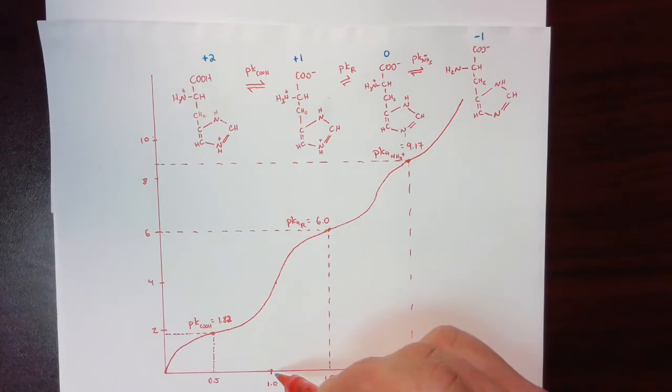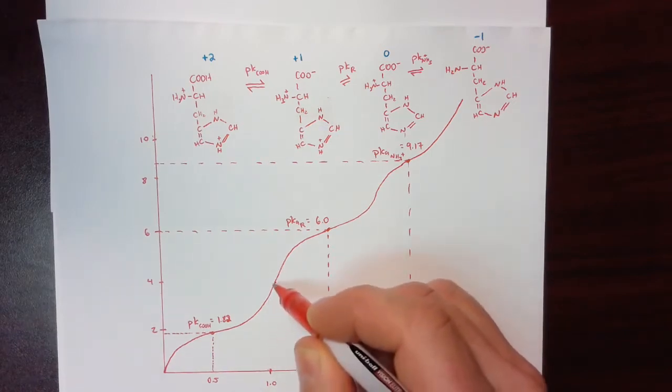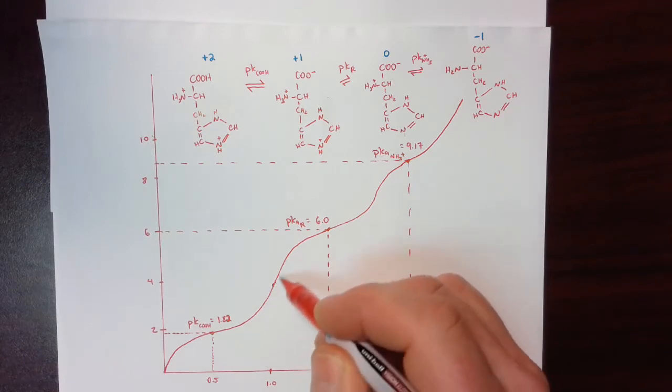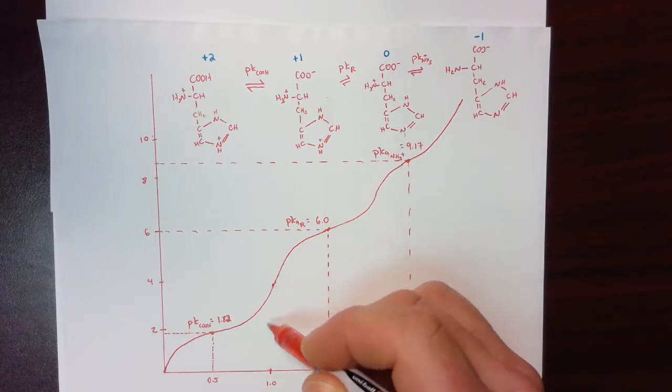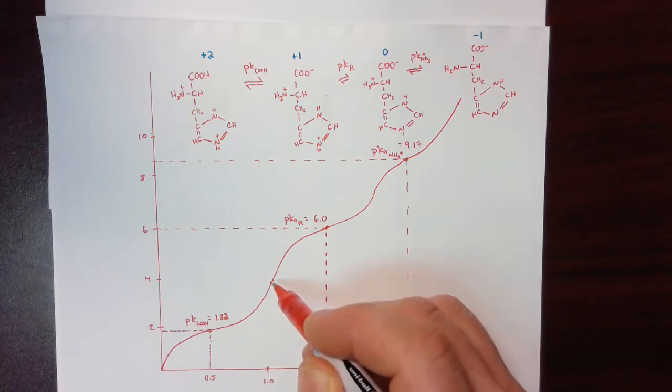You can see that this corresponds to 1 down here. When we say equivalence of OH we are referring to adding the same concentration of base and acid, and on a titration curve that point occurs at the inflection point of the graph. In this case the equivalence is labeled as 1 and that will always be where we have an inflection point in the graph.